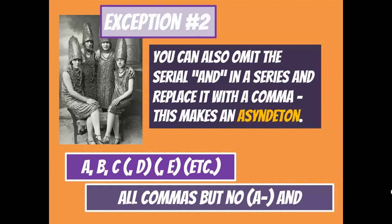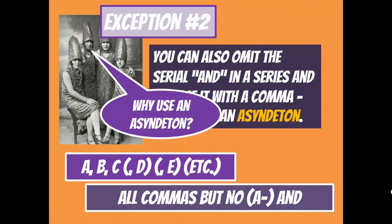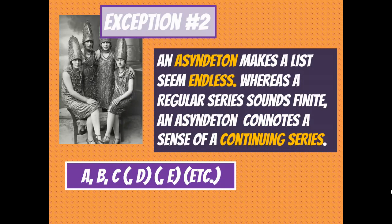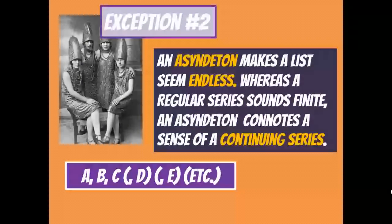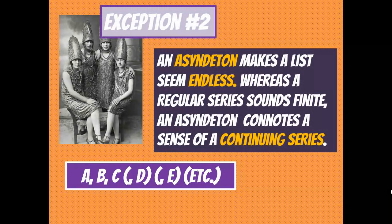The prefix 'a' makes something 'not' — like asymmetrical means not symmetrical. So this is why we call it an asyndeton: it doesn't have the 'and.' Why use an asyndeton? It's one of my favorites. It makes the list seem endless. Whereas a regular series sounds finite with an end, an asyndeton connotes that the list actually continues — as if there's more you could have said, but you simply stopped.